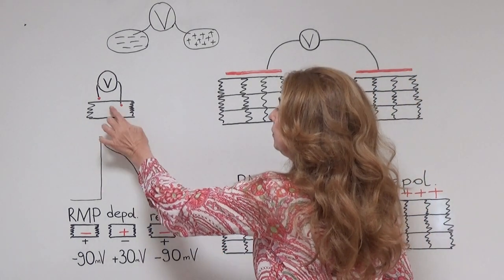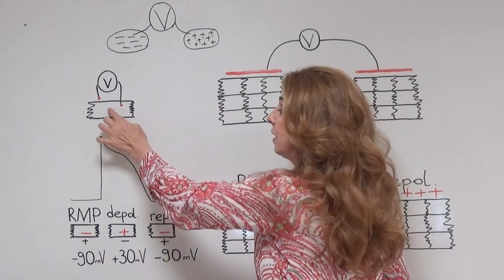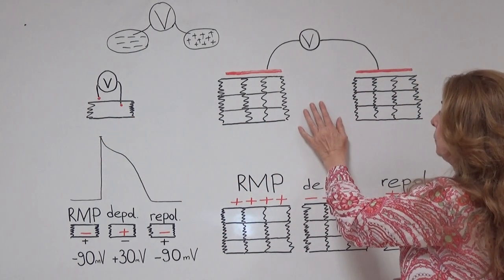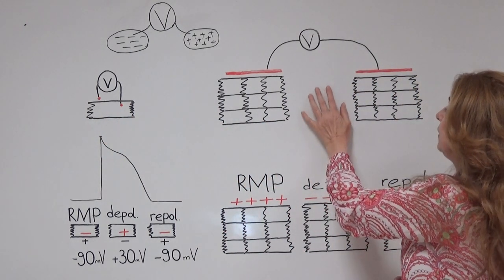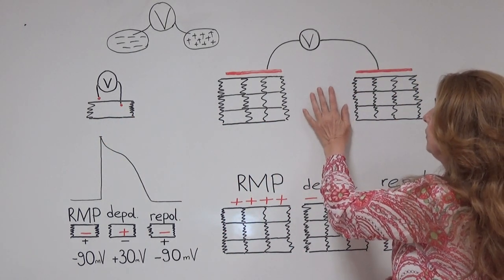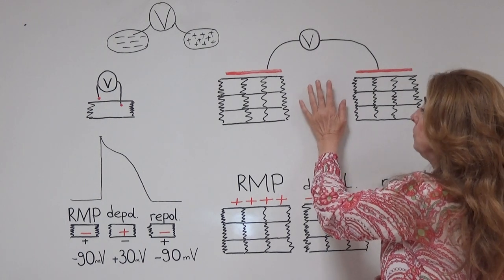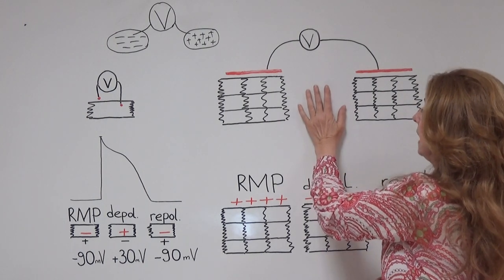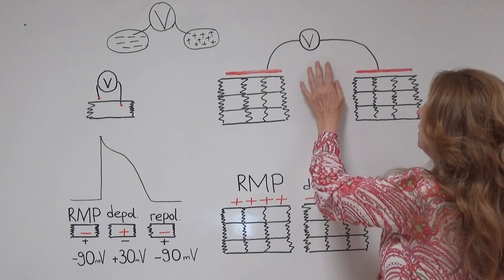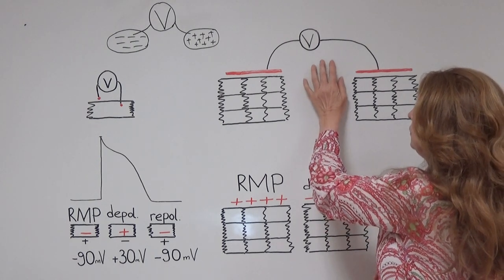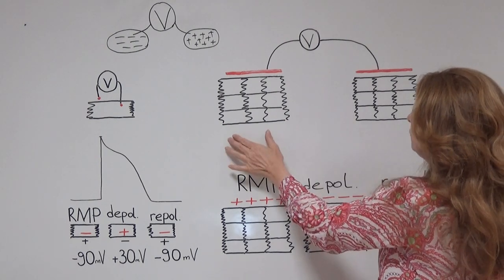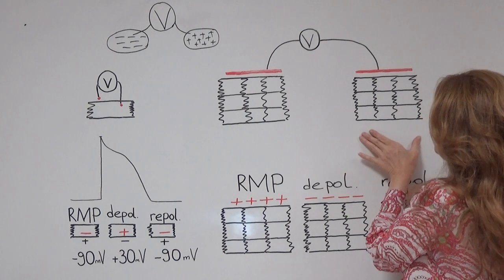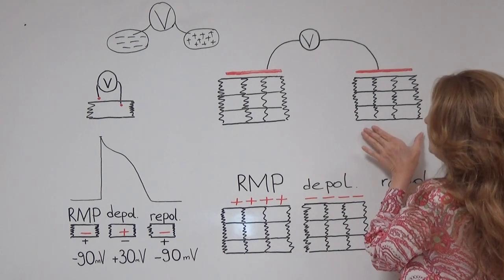During an intracellular recording we make a recording from only one cell. During an extracellular recording we make a recording from more than one cell — from many cells. We record the electrical potential difference between two groups of cells.